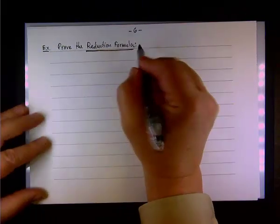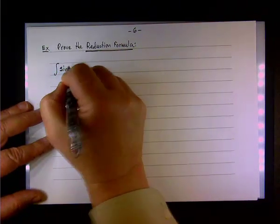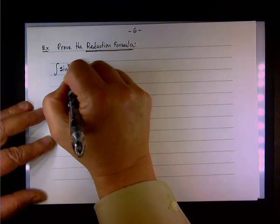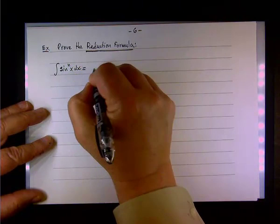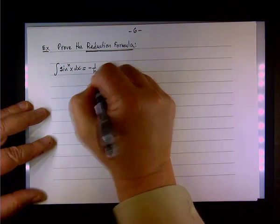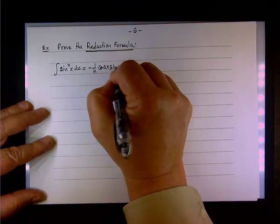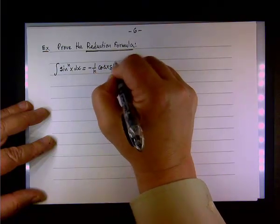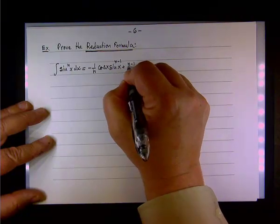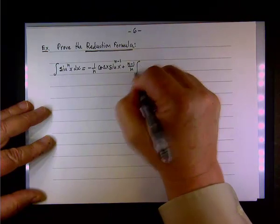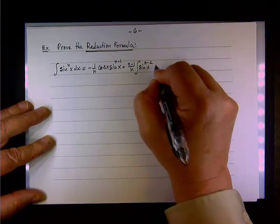So what is the reduction formula? It tells you that if you need to integrate sin x raised to the nth power, the result will be negative 1 over n times cos x times sin x to the power of n minus 1, plus n minus 1 divided by n times the integral of sin x raised to the power of n minus 2 dx.